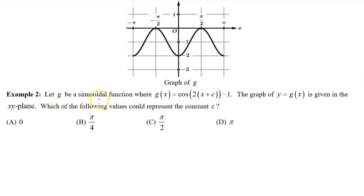Example 2: Let g be a sinusoidal function g(x) = cos(2(x + c)) - 1. The graph of y = g(x) is given in the xy plane. Which of the following values could represent the constant c? We have memorized that one period of the parent function y = cos θ looks like this. Since g(x) has a positive a value, then one period of g(x) will look just like the parent function. The beginning of the period is the phase shift, the first input value. So this period has a phase shift of -π/2. The c value is the opposite of the phase shift. So for the period that I have highlighted, the c value would be positive π/2, and that is one of the options, so the answer is C.